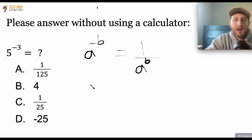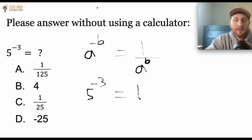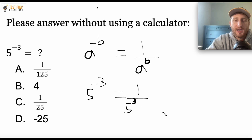So if you're not sure what I mean, let me show you here. We can take 5 raised to the negative 3 and rewrite it as 1 over 5 raised to the positive 3. This is just an exponent rule to keep in mind in case you get something like this on your test.